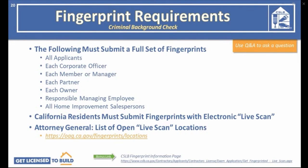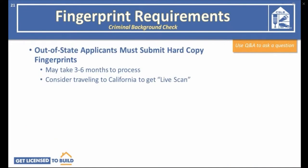Let's take a closer look at fingerprint requirements for a criminal background check. Those who must submit a full set of fingerprints include all applicants, each corporate officer, each member and manager, each partner, each owner, the responsible managing employee, and all home improvement salespersons. If you are in California, you must submit fingerprints electronically via Live Scan. If you are out of state, you must submit hard copies, which take three to six months to process by the FBI and Department of Justice — so you might want to consider traveling to California to get your Live Scan done here.